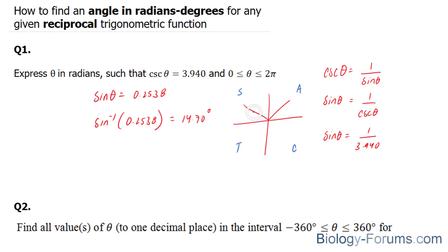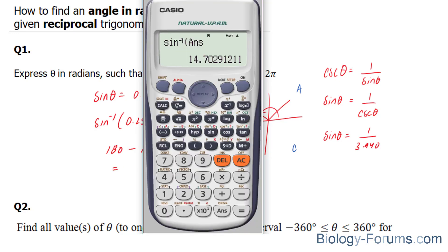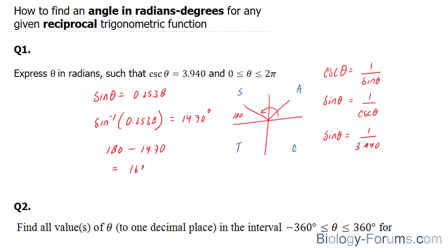We can also find out what this angle is by subtracting from 180 degrees. So 180 degrees minus 14.7 equals our second angle. 180 minus 14.7 is 165.3 degrees.